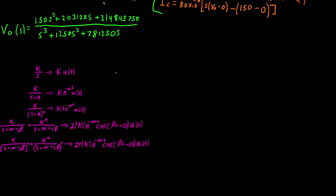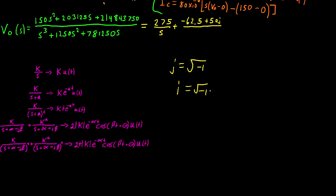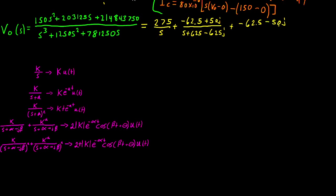In this video on Laplace, I'm going to directly write the partial fraction expansion of V_o(s). This is going to be 275/s, plus (−62.5 + 50j) / (s + 625 − 625j), plus (−62.5 − 50j) / (s + 625 + 625j), where j is equal to the square root of −1. Typically in mathematics we say i = √(−1), but i was already taken for current, so in electrical engineering we use j.